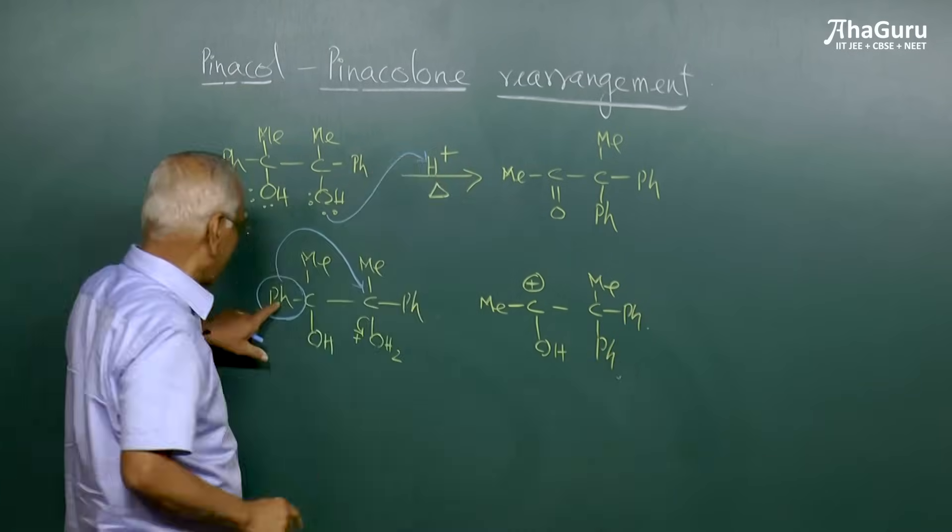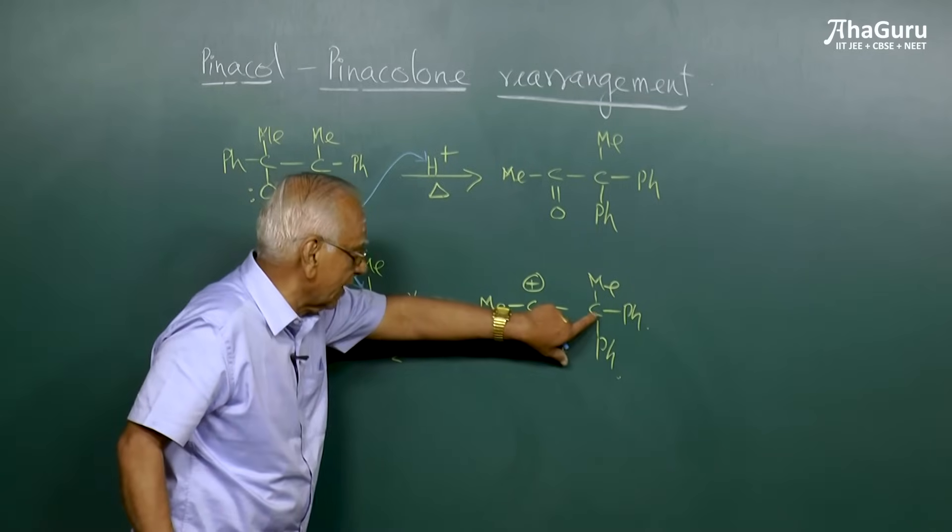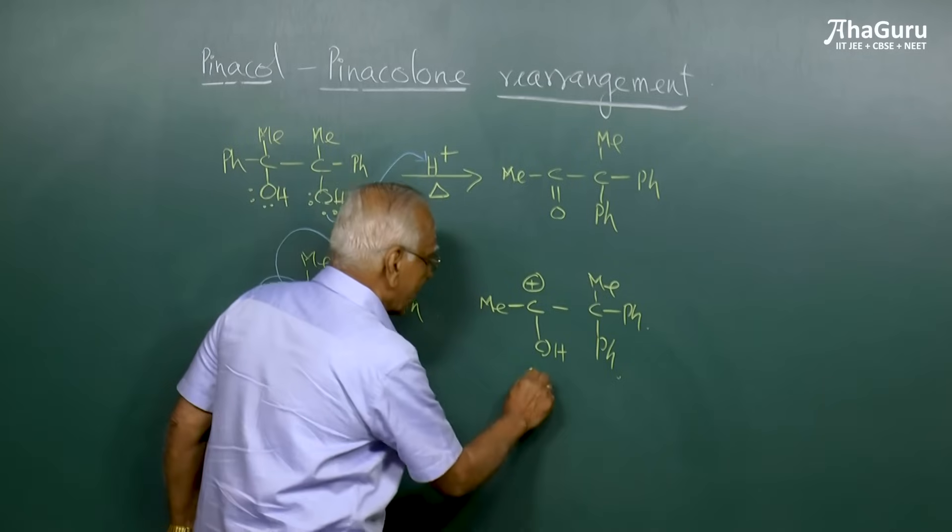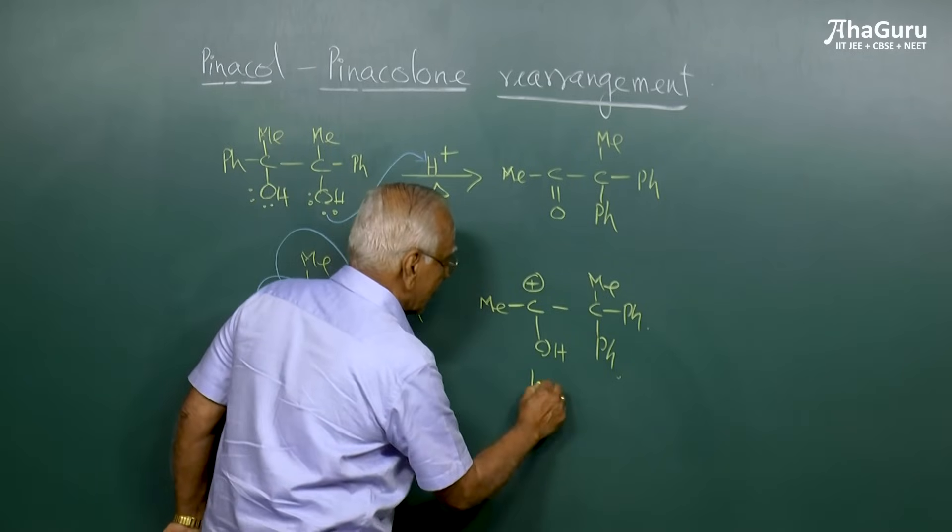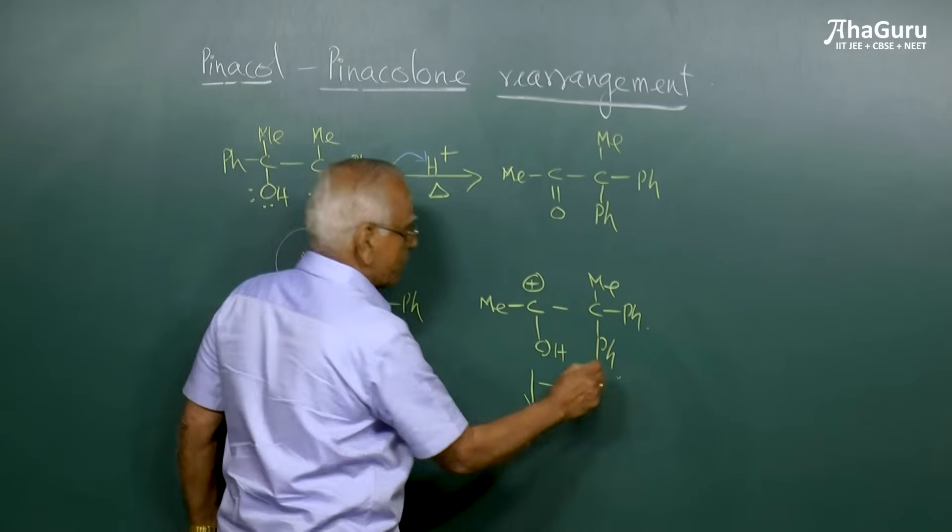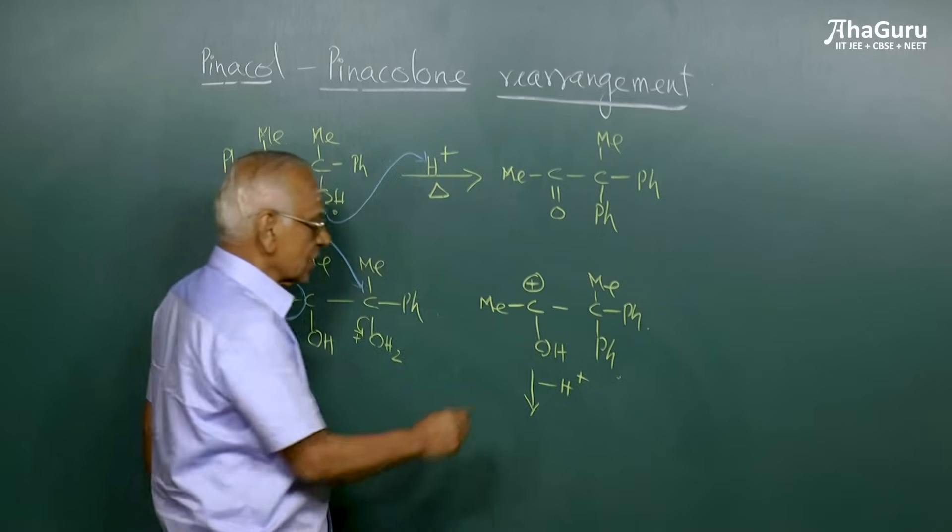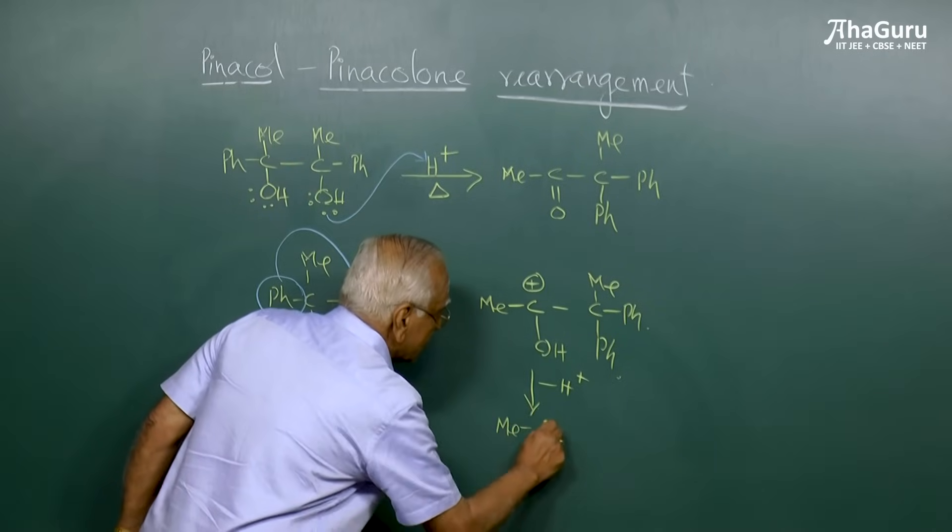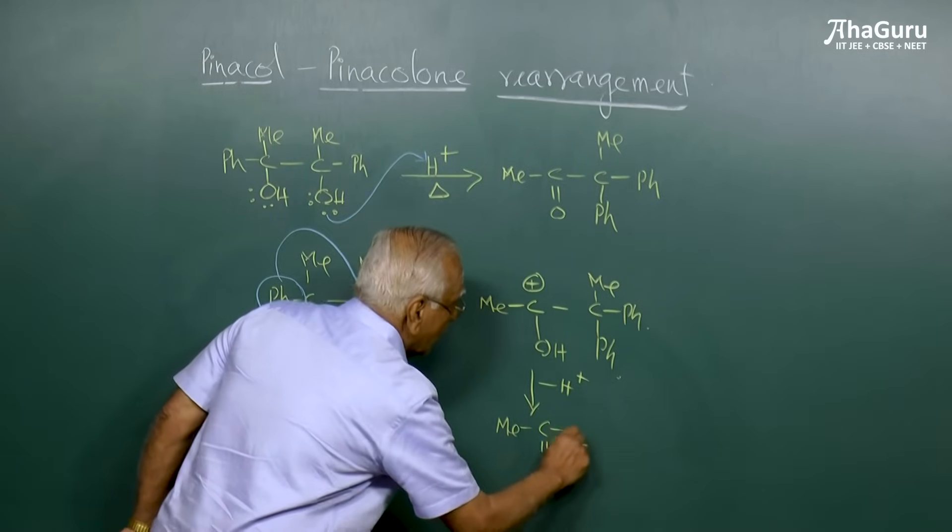Now you see here, this phenyl group has migrated to this particular carbon atom. Valency is satisfied here, whereas here valency is not satisfied. How do you get back the tetravalency? By the loss of a proton, deprotonation, and this is removed and thereby it is converted into C=O.